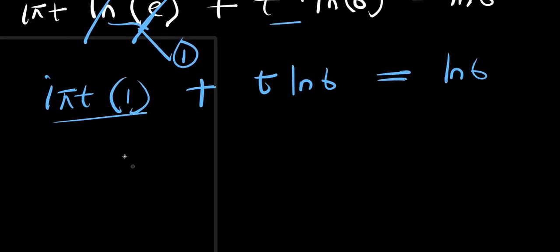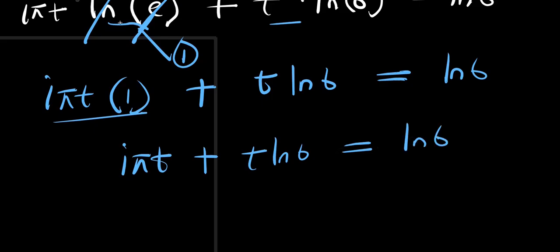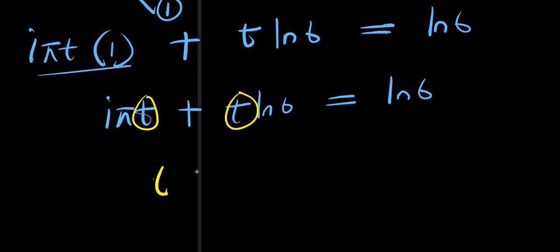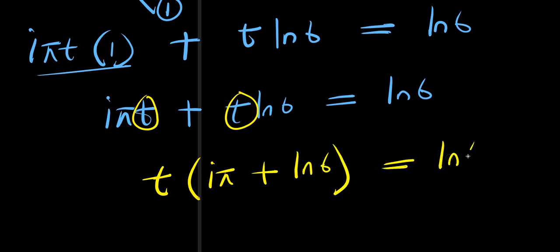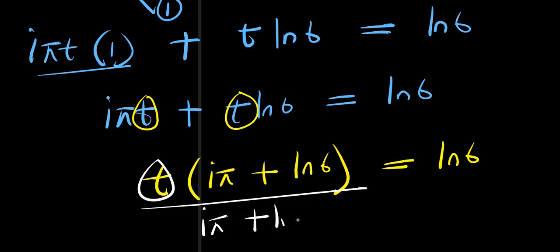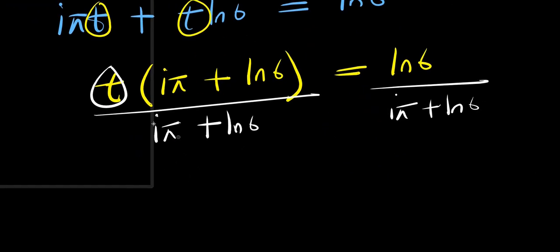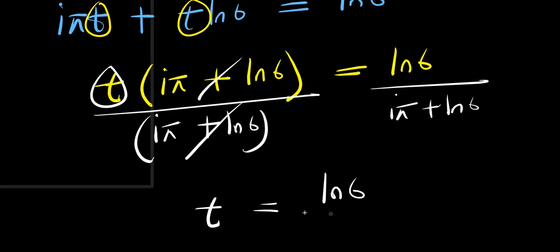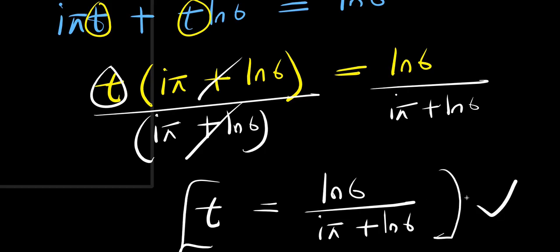So we have iπt plus t times ln of 6 equals ln of 6. We can factor out t to get t times (iπ plus ln of 6) equals ln of 6. Dividing both sides by (iπ plus ln of 6), we get t equals ln of 6 divided by (iπ plus ln of 6). This is our answer using this first method.